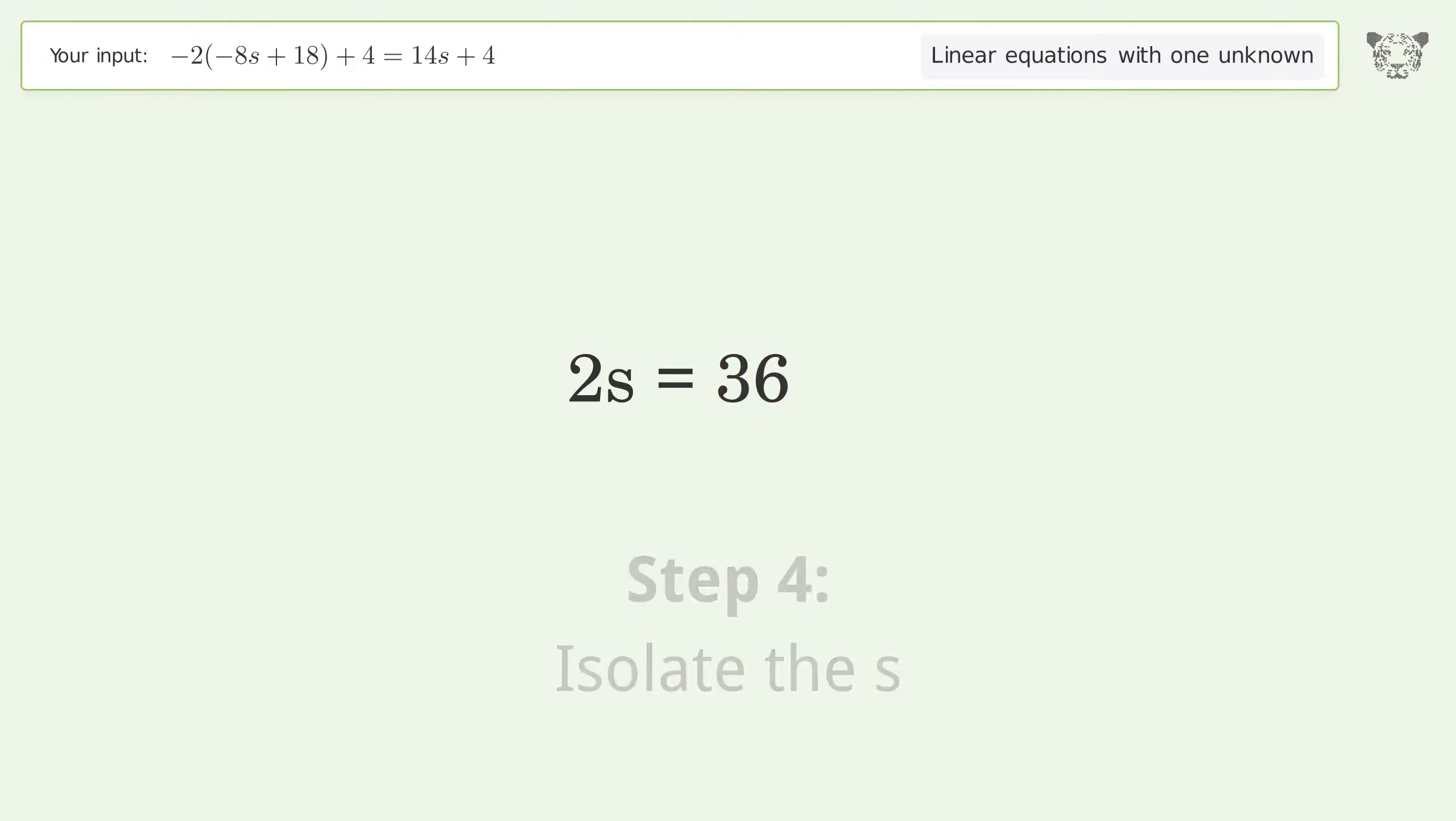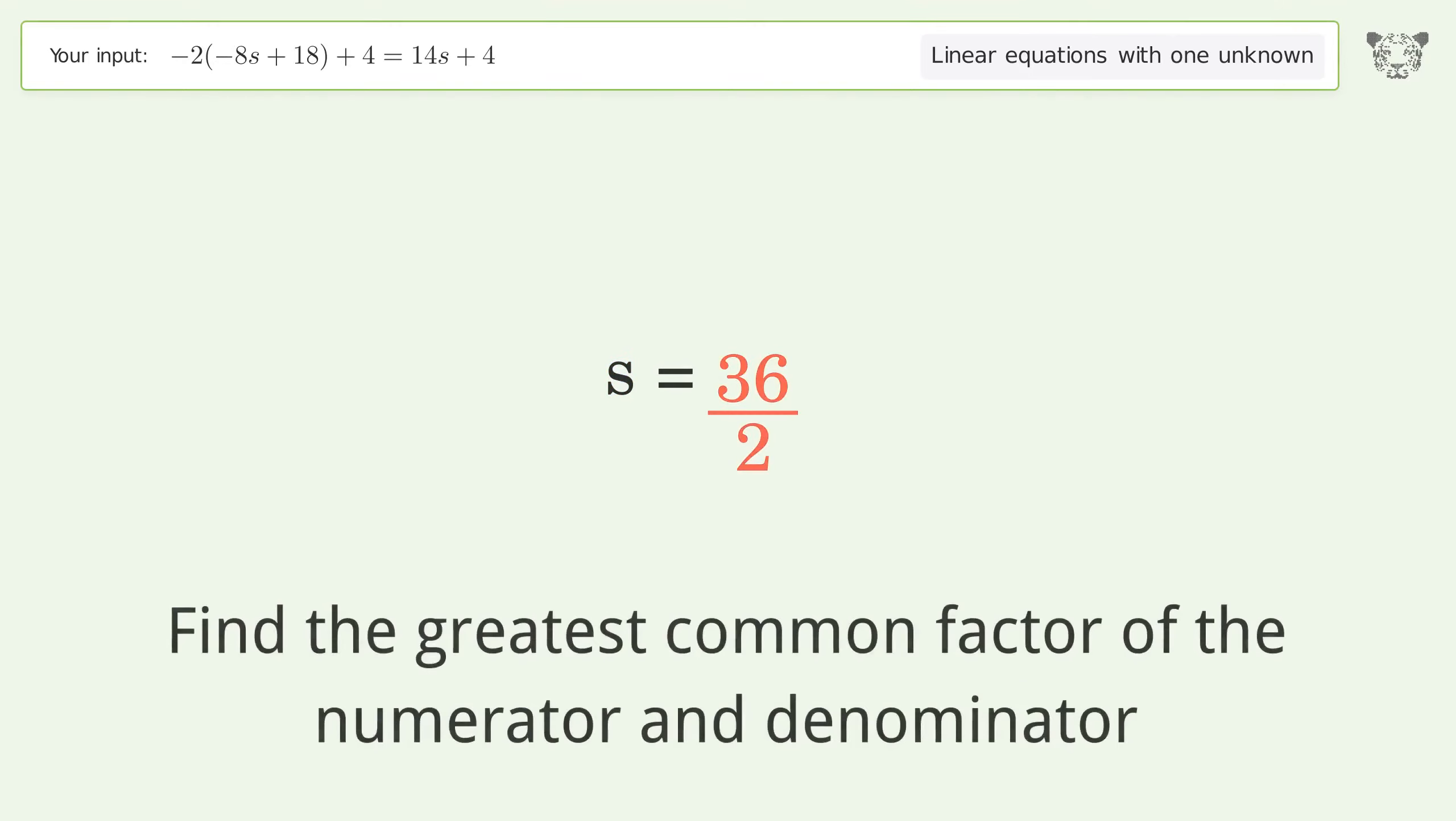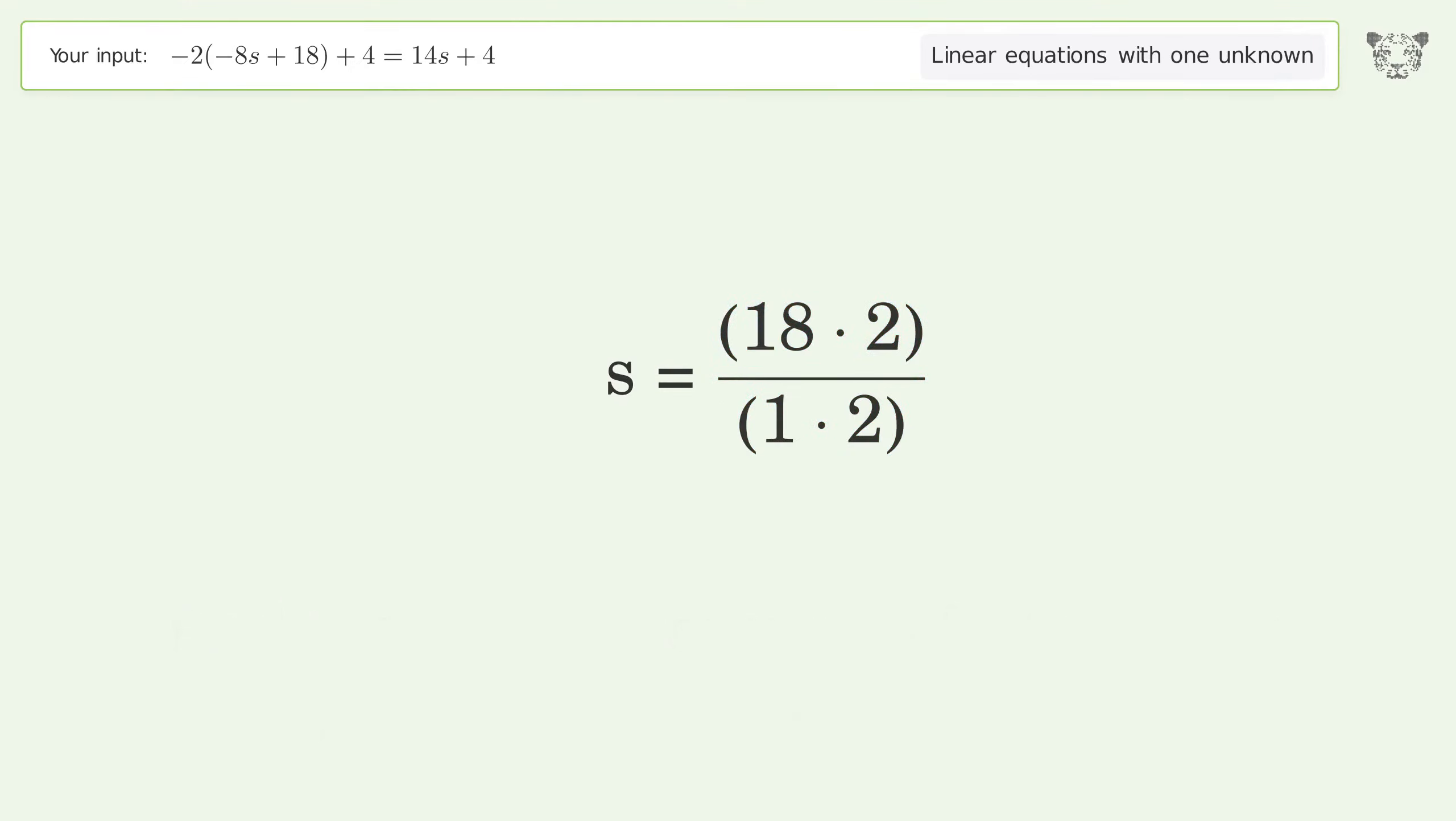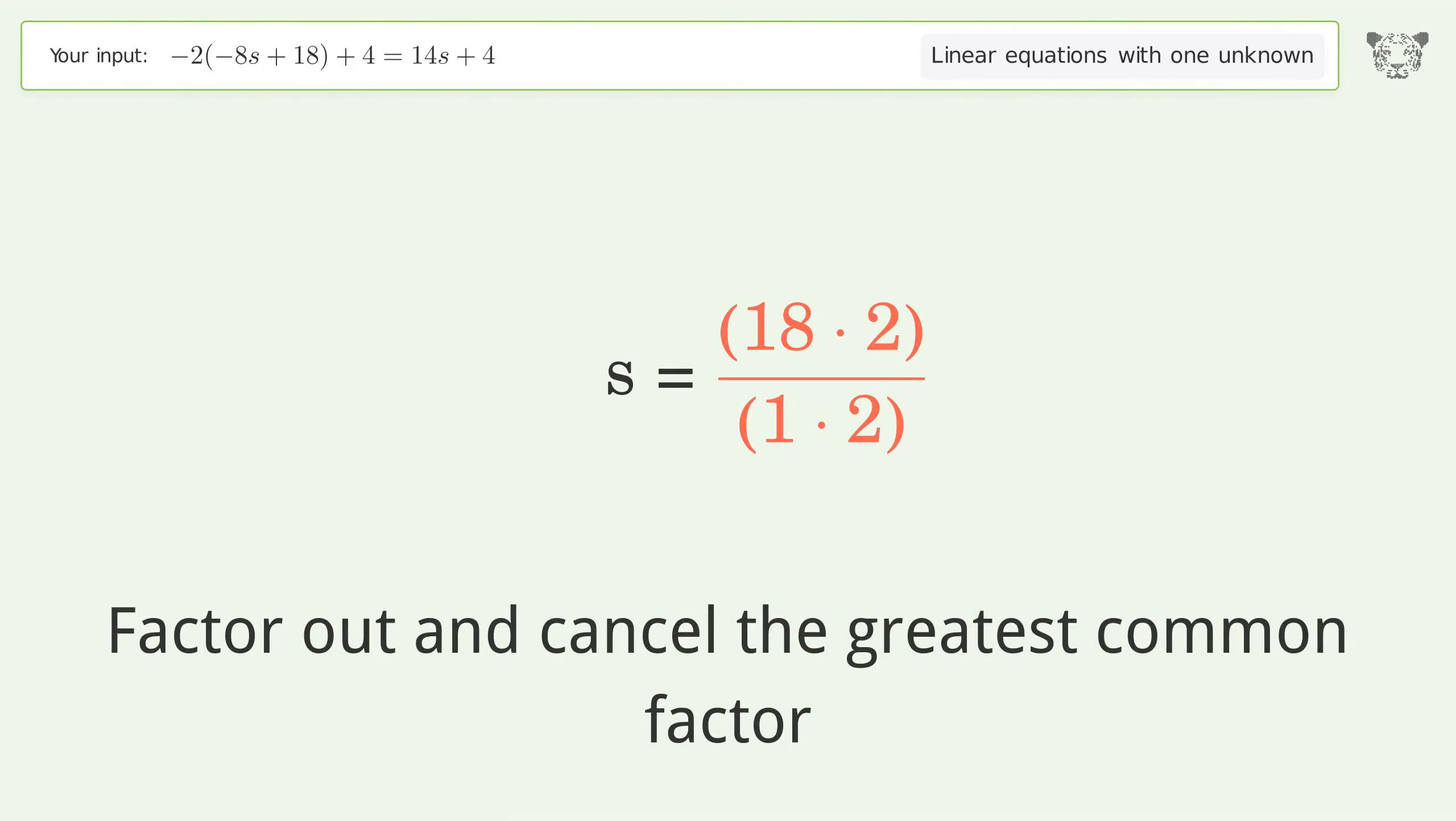Isolate the s by dividing both sides by two. Simplify the fraction by finding the greatest common factor of the numerator and denominator, then factor out and cancel the greatest common factor.